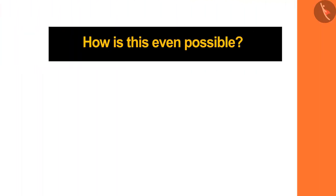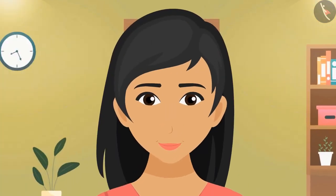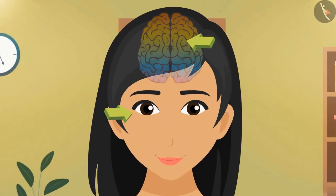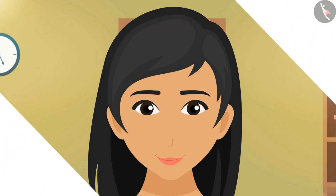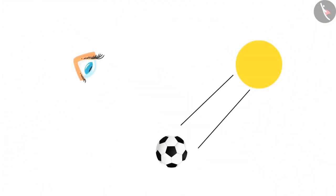But how is this even possible? Have you ever thought of it? The whole game is about our eyes and brain. Today in this video, we'll know how the eyes help us to see any object in the world, and we'll also discuss the different parts of the eye.